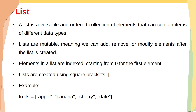Before discussing the program, let's see what a list is, since we are going to read n numbers and store them in a list. A list is a versatile and ordered collection of elements that can contain items of different data types — it is a sequence data structure. Lists are mutable, meaning we can add, remove, or modify elements after the list is created. Elements in a list are indexed starting from 0. Lists are created using square brackets. For example: fruits = ['apple', 'banana', 'cherry', 'date'].